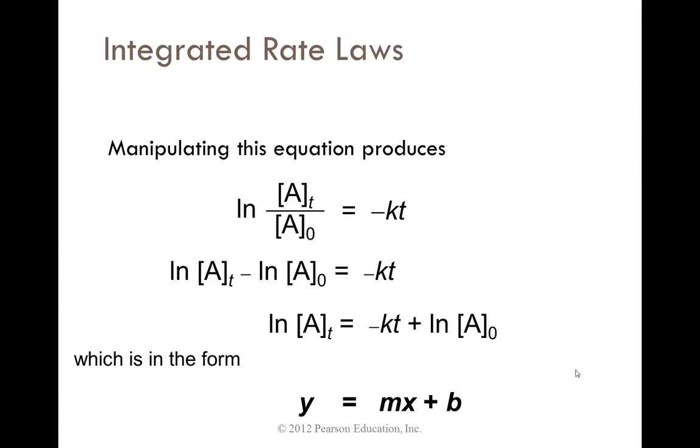Manipulating this equation produces: taking the natural log of A_t over A naught, we can substitute this out to have the natural log of A_t minus the natural log of A naught equals negative k times t. We rearrange this and it becomes the slope-intercept equation, where k is the slope and the initial concentration is the intercept.